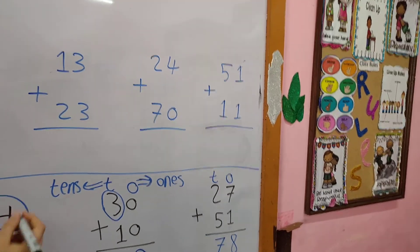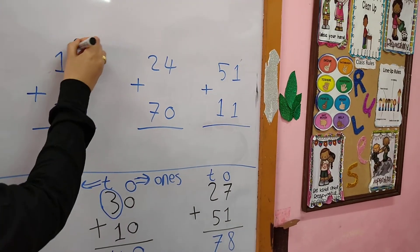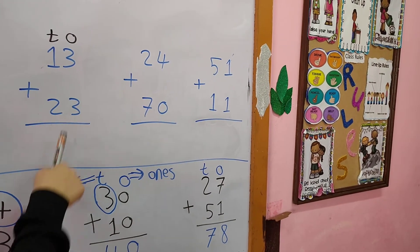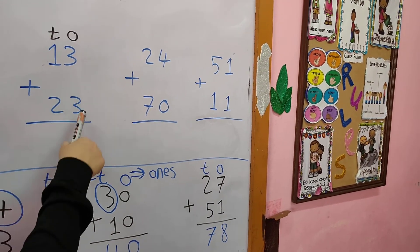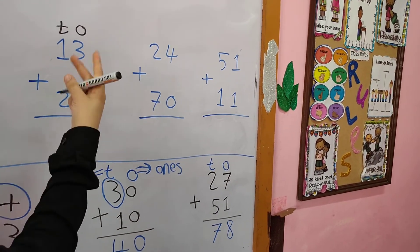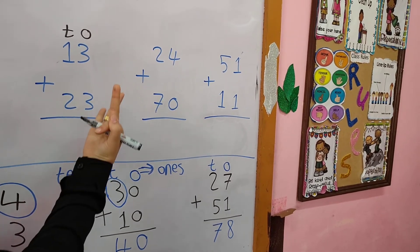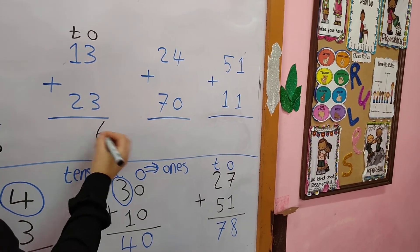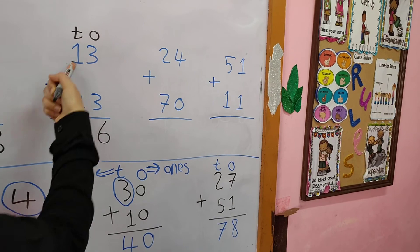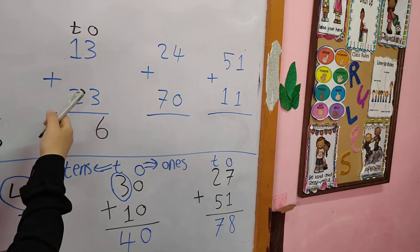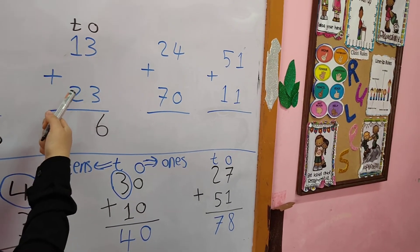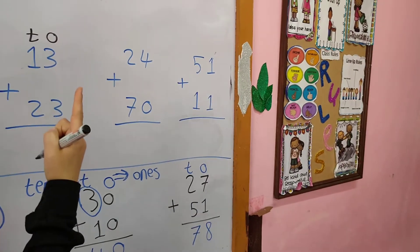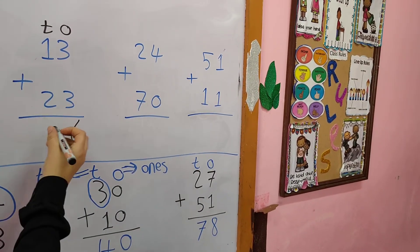13 plus 23. The first thing: write O and T. In the 1's column: 3 plus 3. I put 3 in my mind and another 3 on my fingers and count after 3: 4, 5, 6. In the 10's column: 1 plus 2. Where is the greatest? 2. I put 2 in my mind and 1 on my fingers and count after 2. After 2: 3. So the answer is 36.